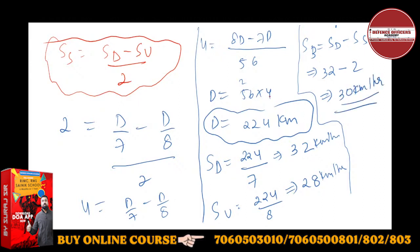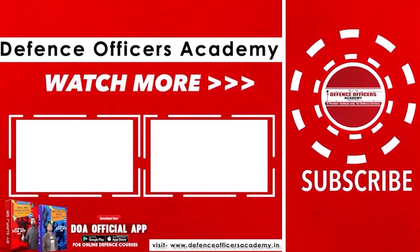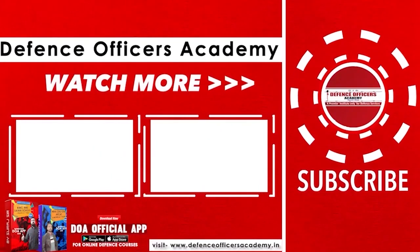You can also calculate speed of boat as SD plus SU upon 2. Speed of boat equals 32 plus 28 upon 2, which is 60 upon 2, again giving 30 kilometers per hour.